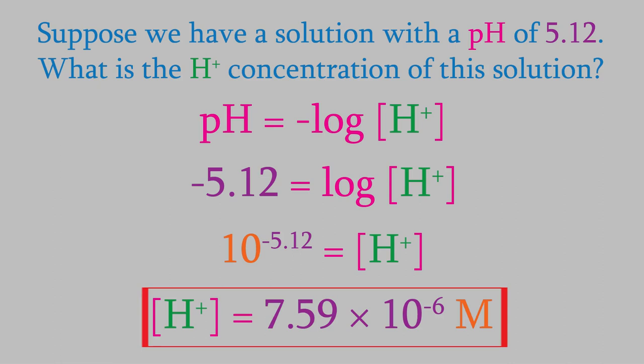That's an important step to remember. If the logarithm is by itself on one side of the equation, we can get rid of the log by making the other side of the equation the exponent on 10. We'll get plenty of practice working with logarithms and pH in class and in the next several videos.